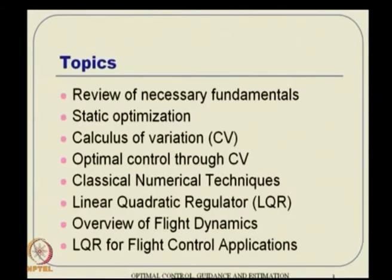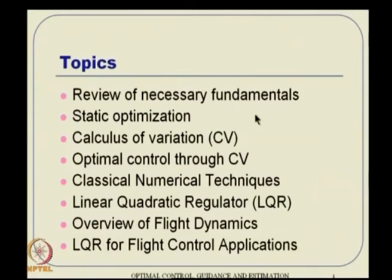The topics to be covered in this course are: first, a review of necessary fundamentals — numerical methods, matrix theory, algebra and whatever background material is needed. This will be quickly reviewed. Then, static optimization concepts, which are a kind of backbone for optimal control, because one method of solving optimal control is to first convert it to a static optimization problem and take advantage of static optimization routines.